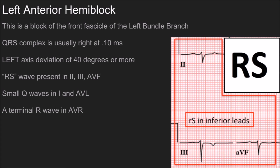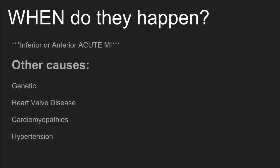So you've taken the time to learn how to identify this on an EKG — why is it important, and when does it happen? They happen often enough in the setting of an inferior or an anterior acute MI. Both of those carry high morbidity rates. The inferior, obviously, because the entirety of the conduction system is perfused by the right coronary artery. So often enough, you're going to see it in the inferior MI because it is a right coronary artery problem. You can also see them in the anterior MI.